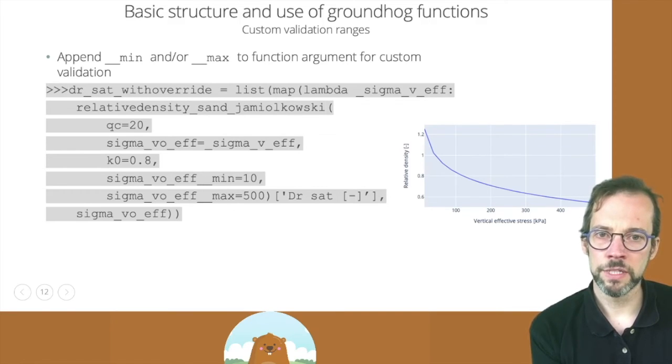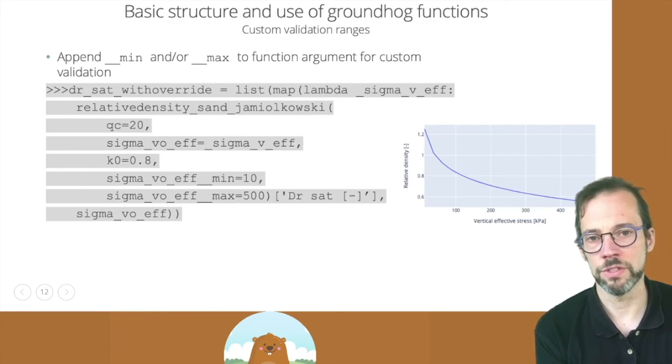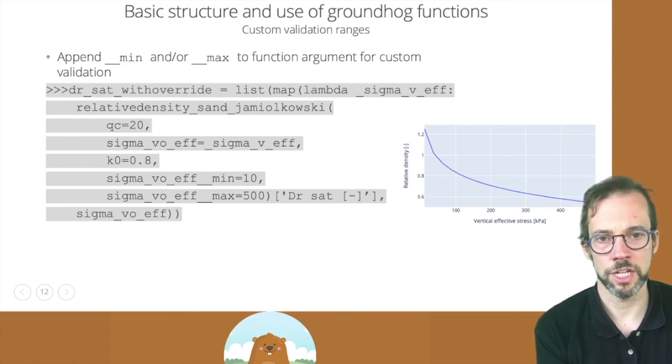So now you have overridden the validation range, but anybody who checks this function can immediately see that you've gone beyond the boundaries which are normally implemented for this function. So this also makes workflows developed with Groundhog easier to check.